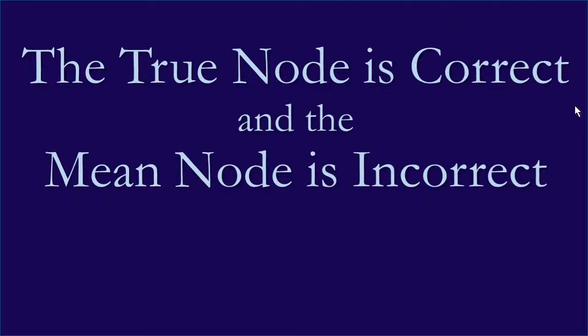Hello. In this video I'm going to summarize the five reasons why the true node is correct and the mean node is incorrect. This is a final summary and condensed conclusion from five videos that form a series on how planetary positions are calculated, and with that understanding of how planetary positions are calculated, why the true node is the actual correct node.